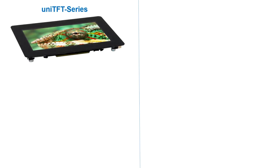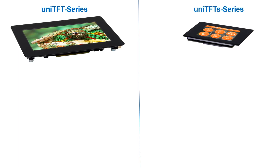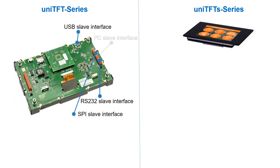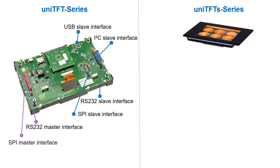Today's last topic highlights the differences concerning the serial interface between UniTFT and UniTFT-S series. The UniTFT series, ranging from 5 inch to 10.1 inch, has as slave interfaces: USB, RS-232, SPI, and I2C. Its master interfaces are RS-232, SPI, and I2C. All seven serial interfaces can be used at the same time.